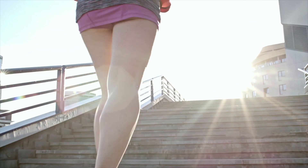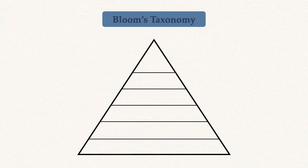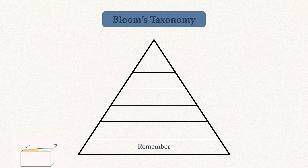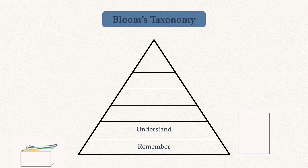According to Bloom's Taxonomy, you should focus on higher levels of learning. These different levels are represented in the form of a pyramid. At the lowest level of this pyramid is remembering, and you can do this by using, for example, flashcards. The second level would be understanding, and here you get familiar with sentence structure — for example, how to build past tense or future tense sentences in the language you're trying to learn.